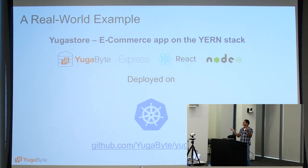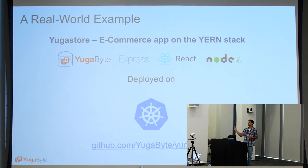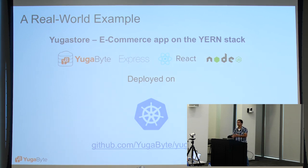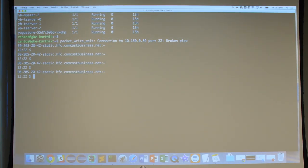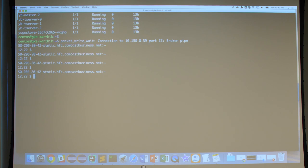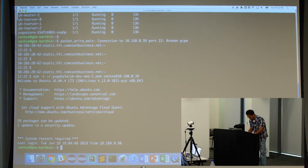We have a fully functioning YugabyteDB cluster completely deployed inside containers, with the e-commerce app also inside containers. We have a replication factor three cluster. First, let's connect to the machine. There are two services that form the database itself: a master service, which is a background service handling things like table creation and coordinating schema upgrades; and tablet server nodes, which actually do the I/O.